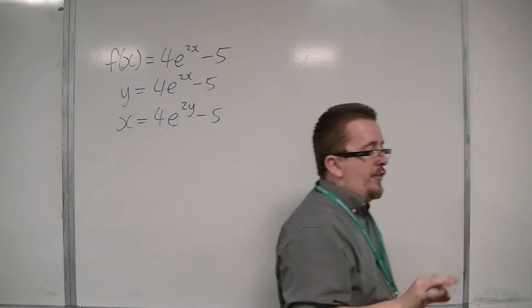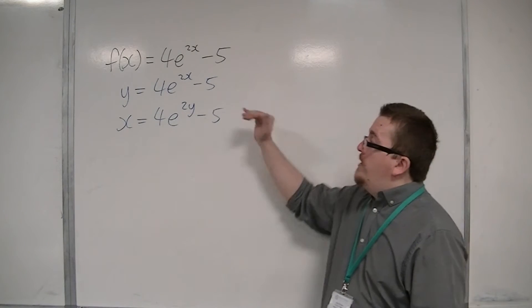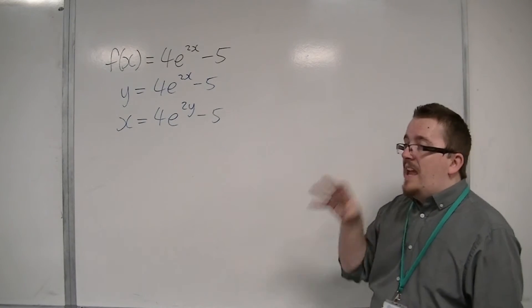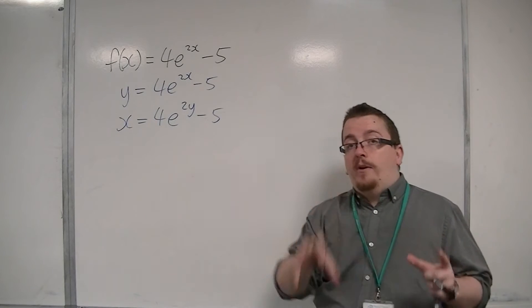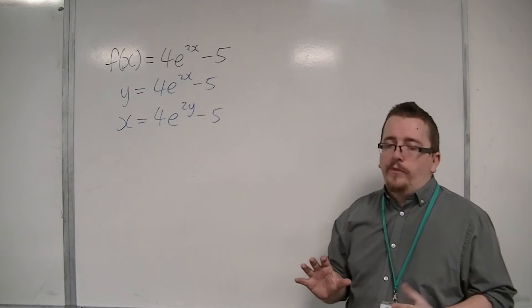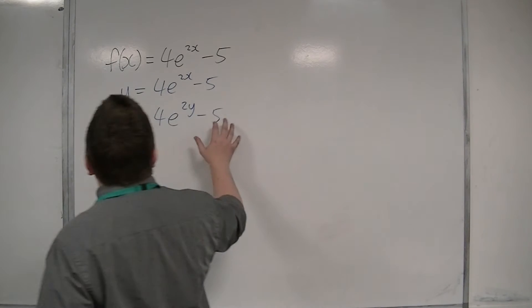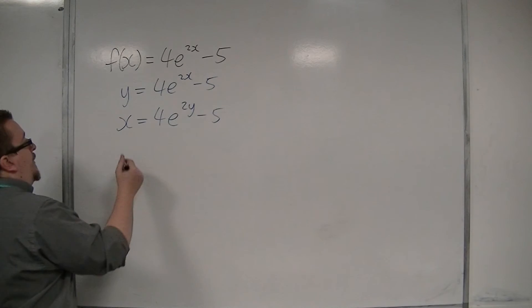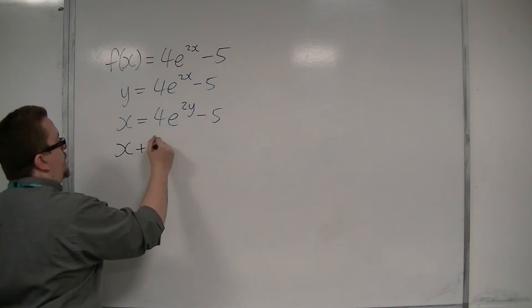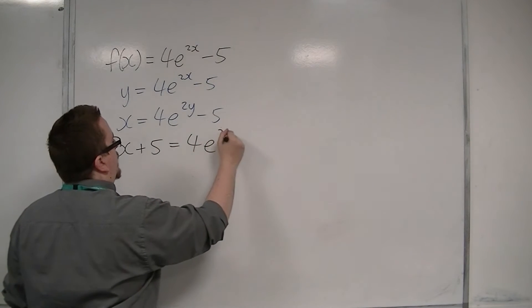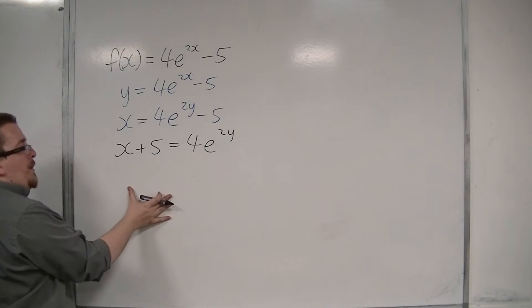Now what you want to do at this stage is to rearrange this equation to get the y as the subject. So you want to get y equals. We're going to add 5 to both sides first. Then we would divide both sides by the 4.